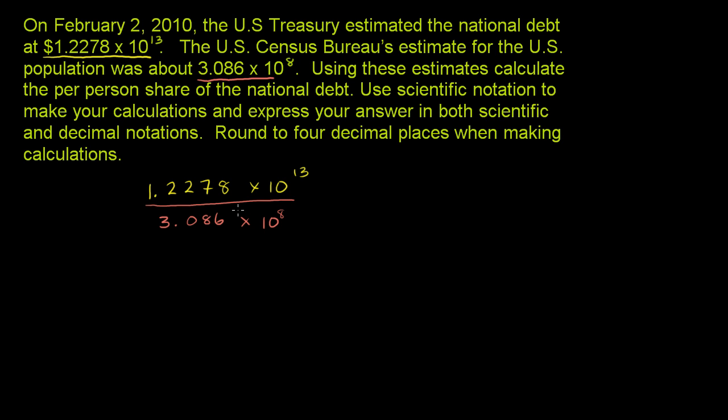And we could separate this into two division problems. We could say that this is equal to the division right here. These guys, 1.2278 divided by 3.086. So 1.2278 divided by 3.086. And then times 10 to the 13th divided by 10 to the 8th.